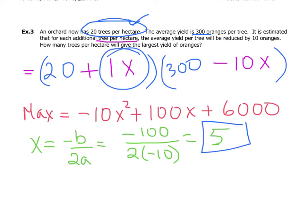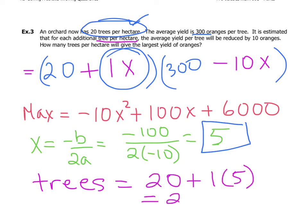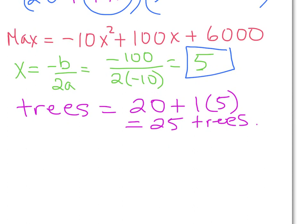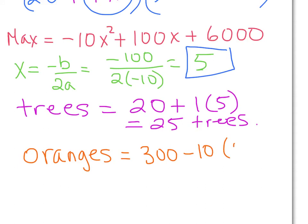Adding five trees gives us 20 plus 1 times 5, which is twenty-five trees per hectare. For oranges per tree: we start at 300 and subtract 10 for each additional tree. Five extra trees means 50 fewer oranges, so each tree now yields 250 oranges.